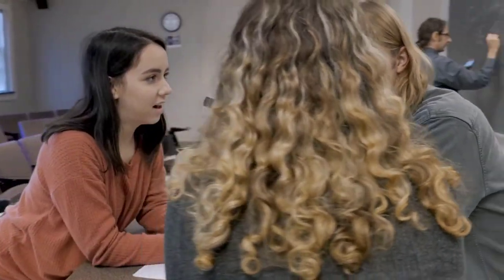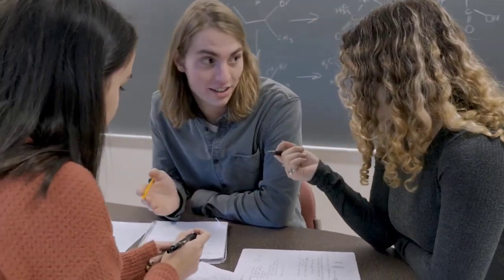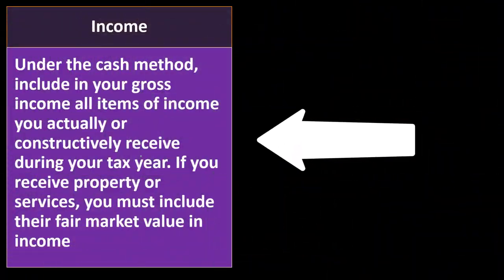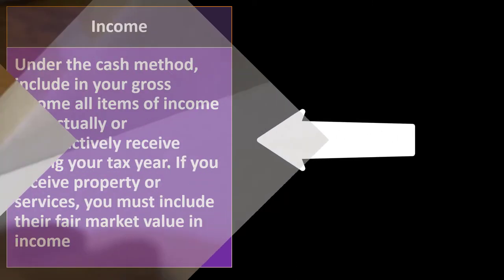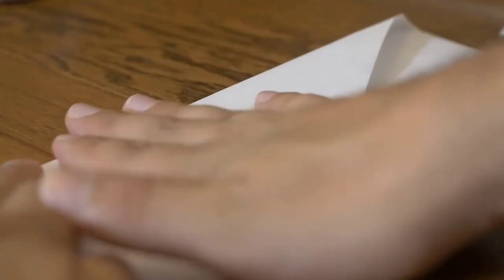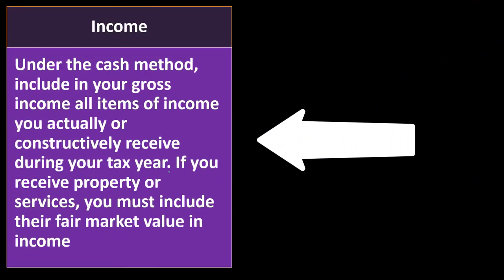The problem with the cash basis method is that it can be manipulated — it's easier, but it can be manipulated. Some things people think of to manipulate it don't actually work under the constructive receipt rules. For example, if someone sent you a check and you just decided not to open it until after year-end because you didn't want to record the revenue — keeping it in the envelope until January — you can't do that. You have constructively received it because there's nothing stopping you from opening it. It's basically your money at that point just because you didn't deposit it doesn't mean you're restricted from it.